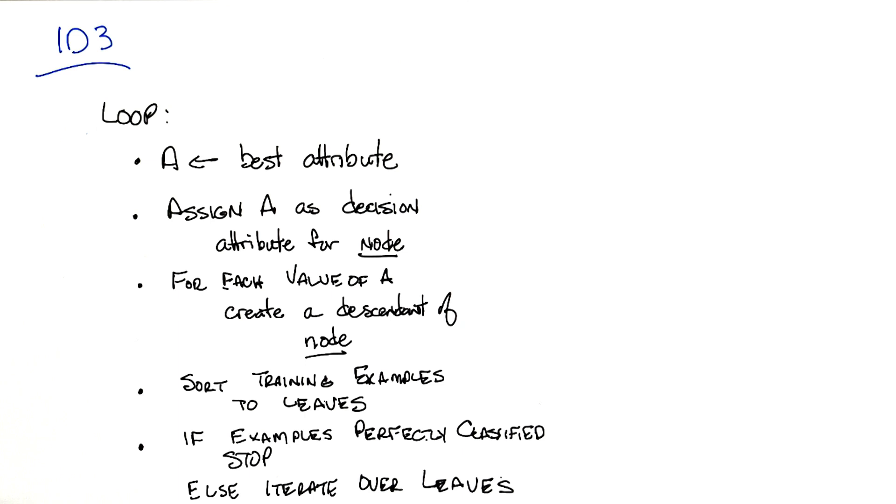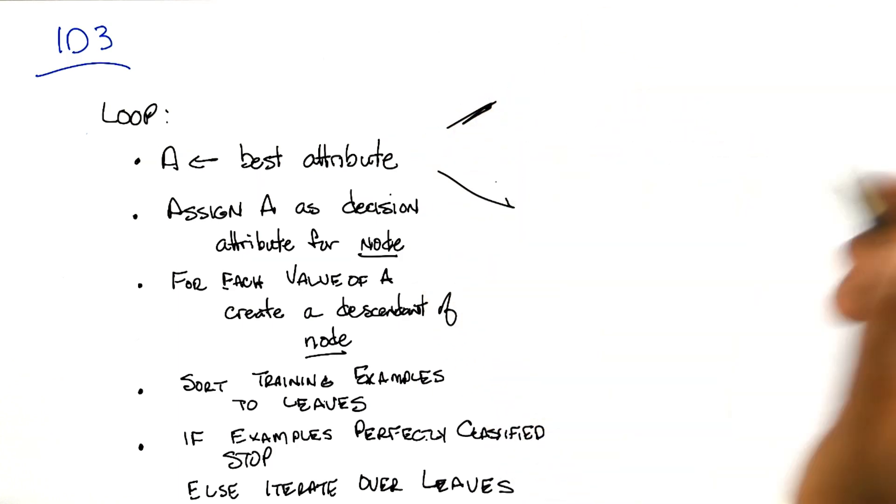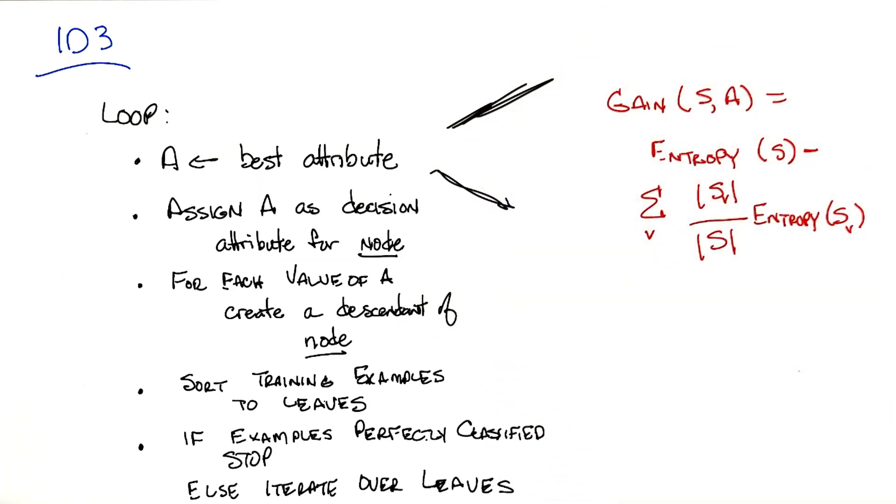And the key bit that we have to expand upon in this case is exactly what it means to have a best attribute. So what exactly is it that we mean by best attribute? There are lots of possibilities that you could come up with. The one that is most common and the one that I want you to think about the most is what's called information gain.